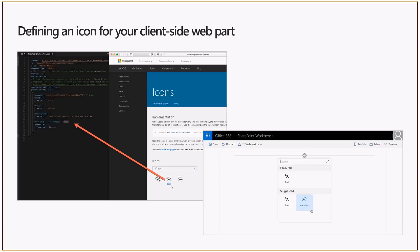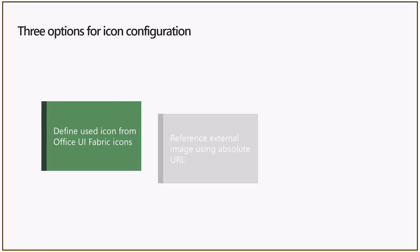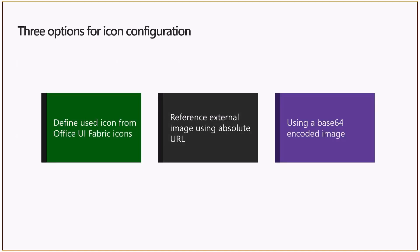There are three different ways of defining that icon. Option one is that you define an icon from the set of Office UI Fabric icons — there's a predefined set which we publish from Office UI Fabric, and you can define it with an identifier of the icon, which is then rendered within the web part picker.